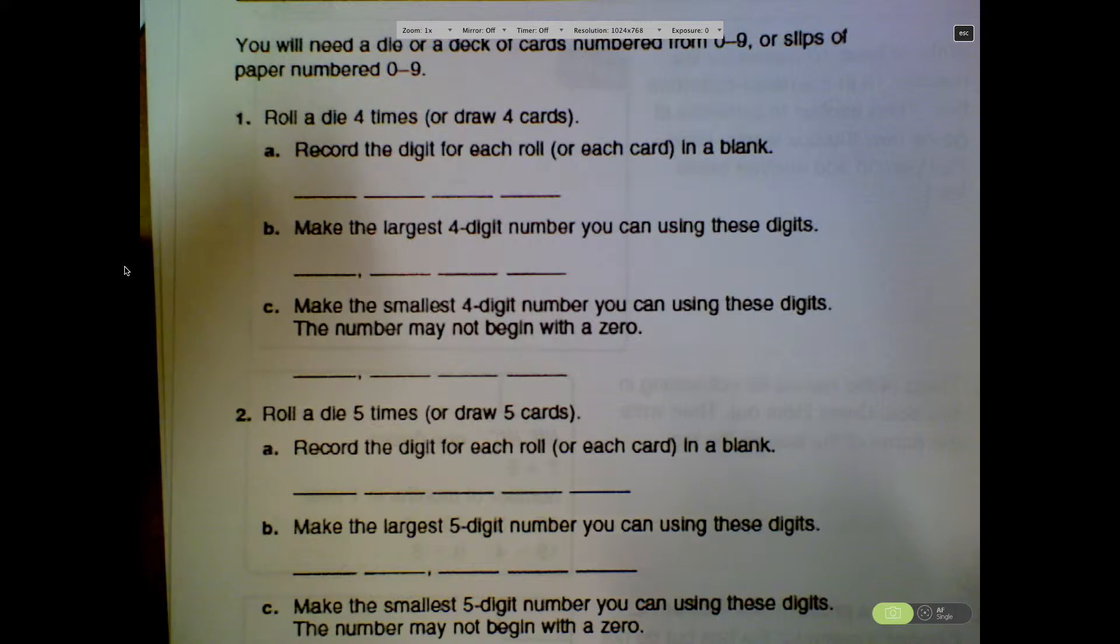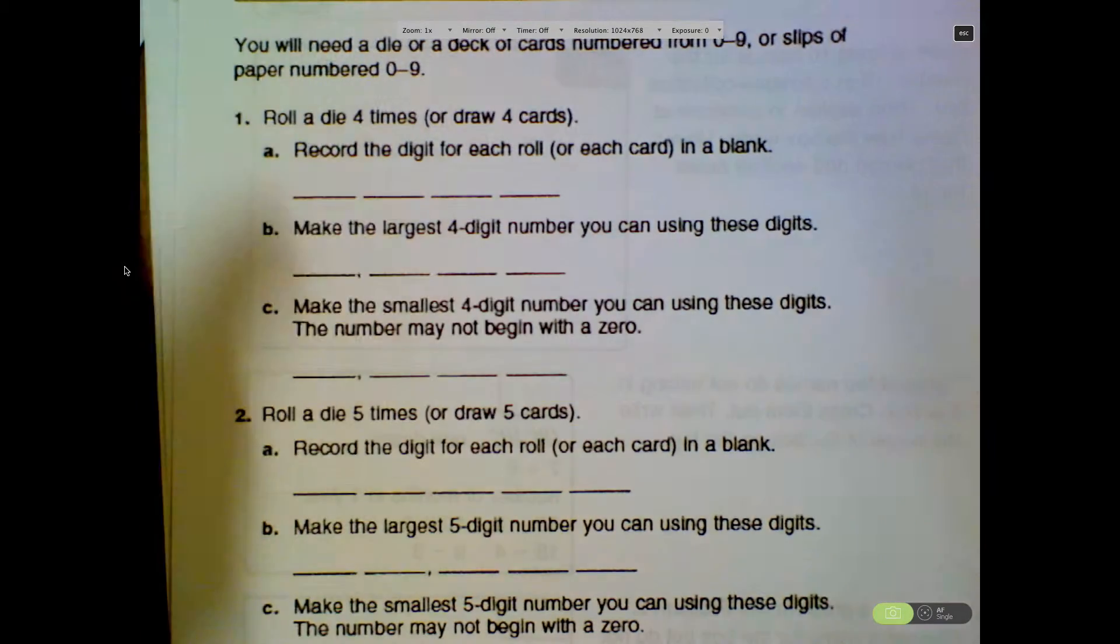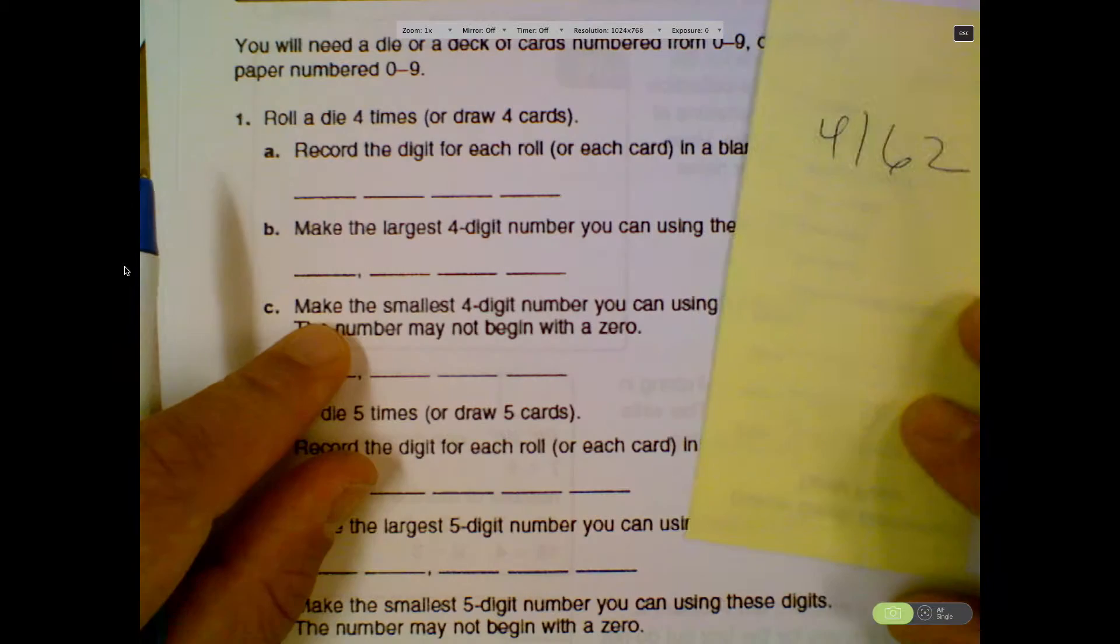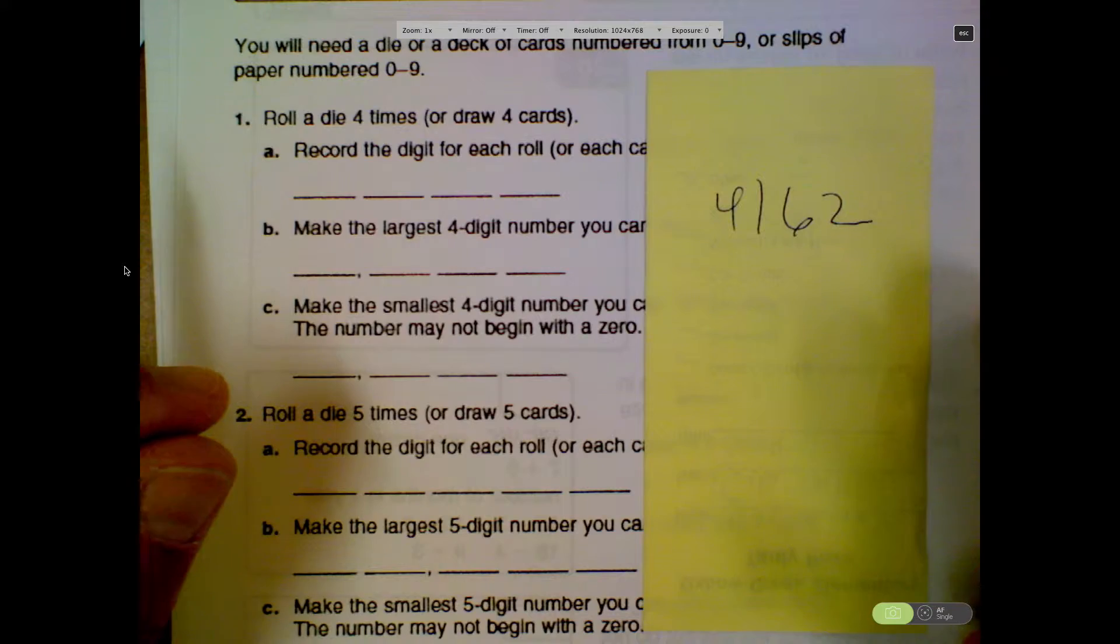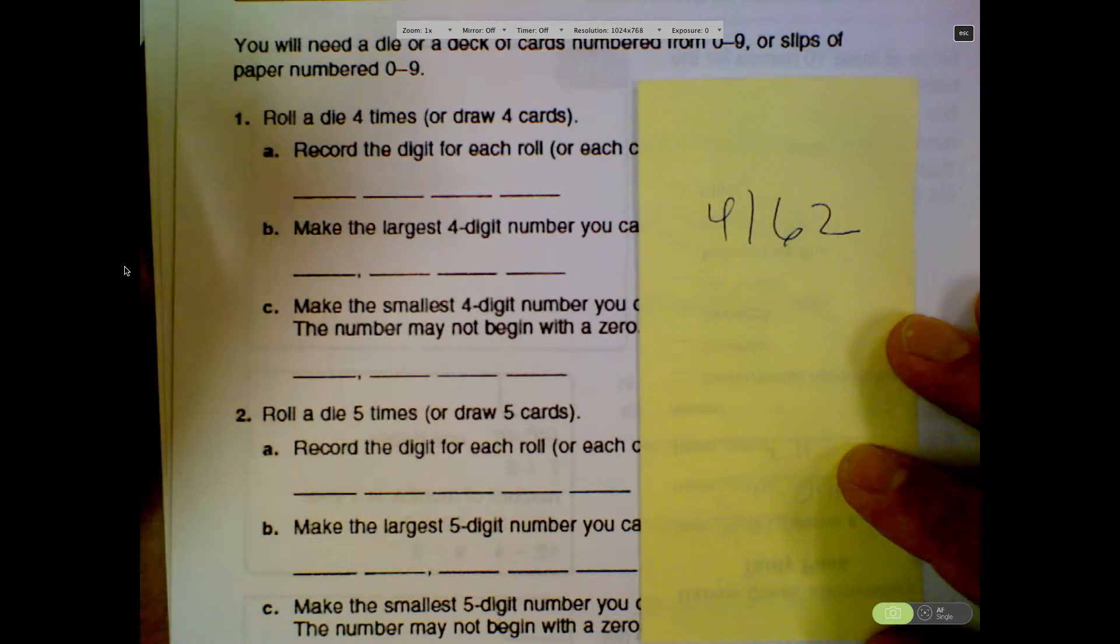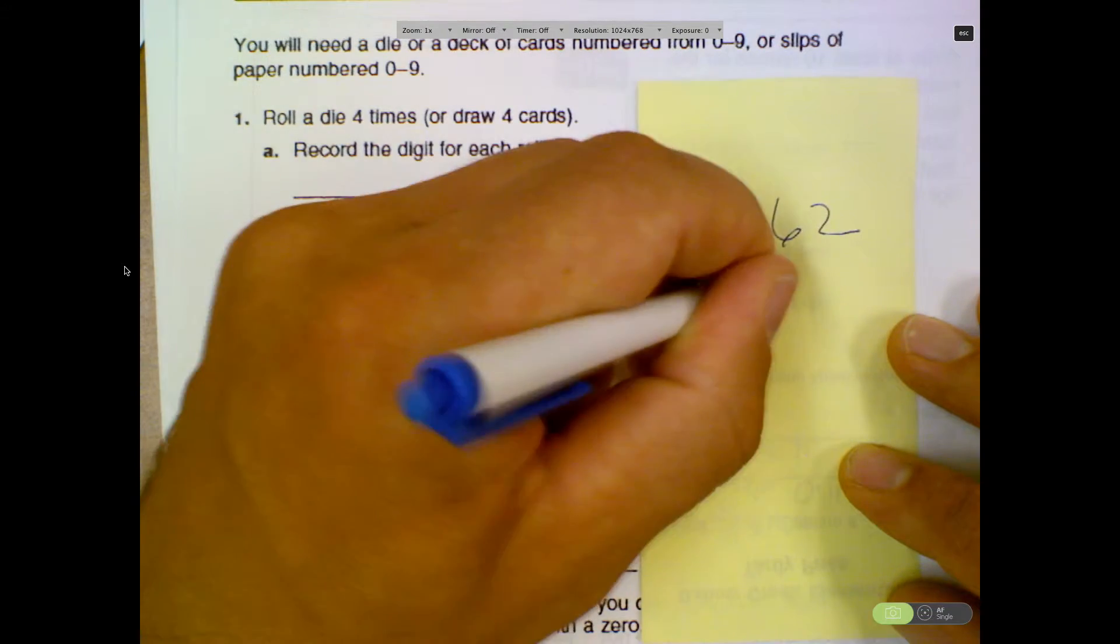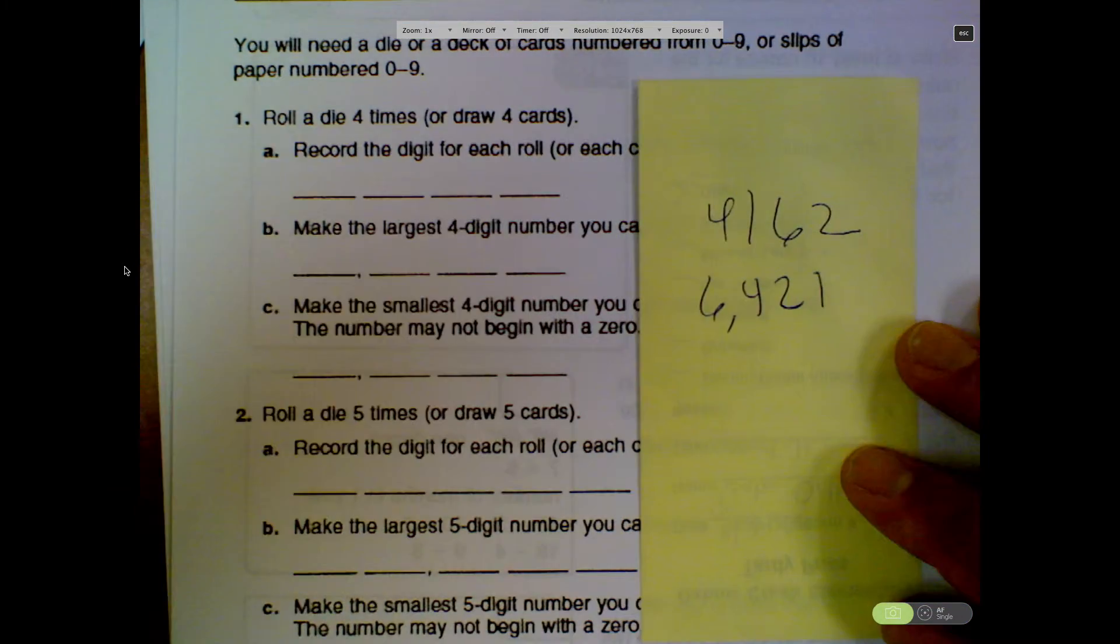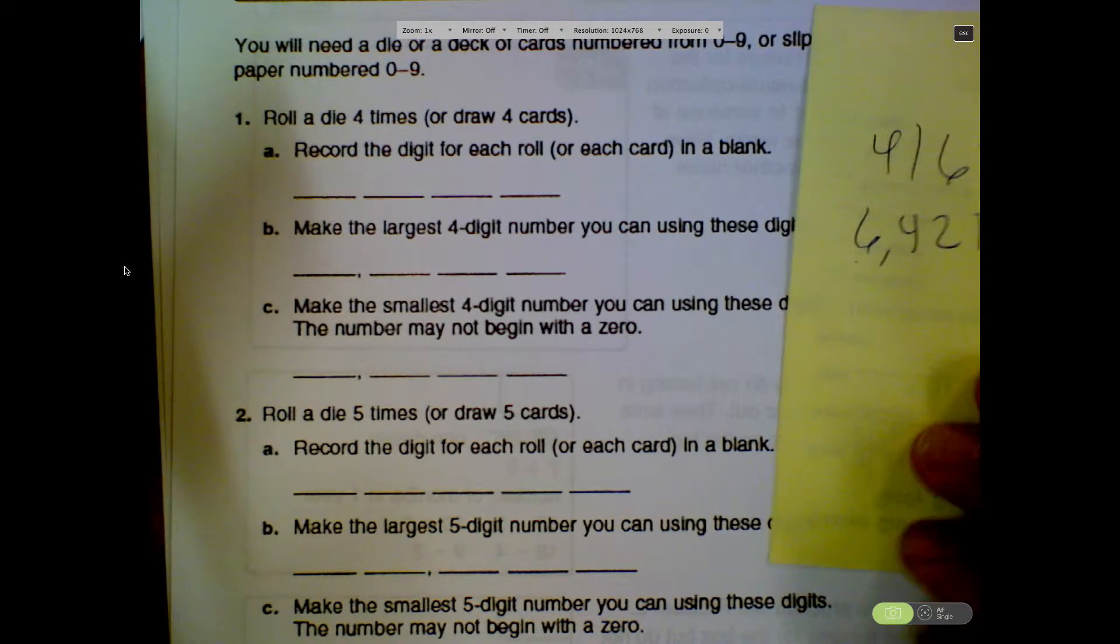And with those four numbers, I need to record the digit on each roll in each blank. So I go 4, 1, 6, 2. That's what I would put in that blank. Then it says make the largest possible number you can. What would that be? Ethan? 4,612. Is that the largest? What do you think, Landon? 6,421. Because you're going, now look, look at how it works. Largest digit to smallest. Okay? That's all right. Don't worry. That's why we're doing this. So we're learning it. It's fine.